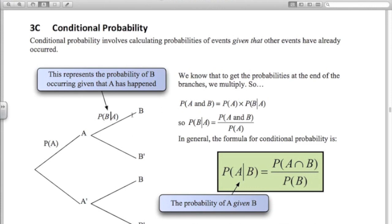Knowing that we multiply along the branches here, the probability of A and B happening is the probability of A times the probability of B given A. So rearranging that formula we get this. So the more general formula for conditional probability is this one here. It's not on the formula sheet, you have to remember it.